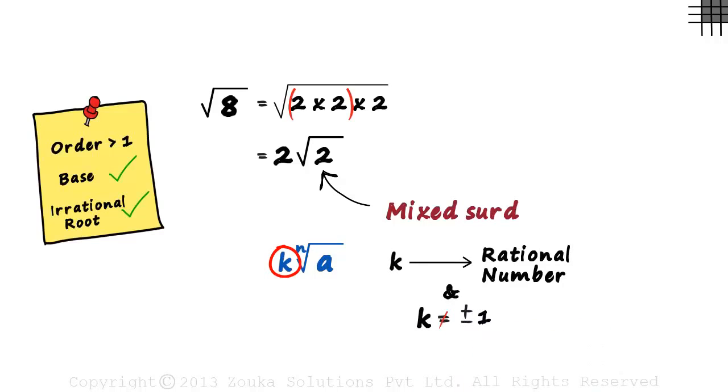If k is one, then it's as good as not multiplying the irrational number with anything. An nth root of a has to be a pure surd. Remember k has to be a rational number and this has to be irrational, and k cannot be equal to plus or minus one. k is also referred to as the rational factor.